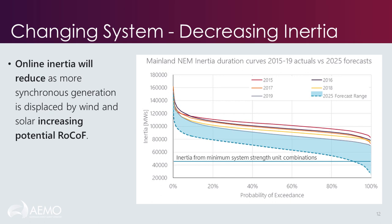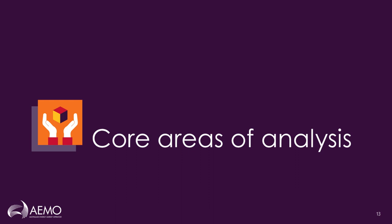The lower most edge of the projected area is a conservative view of where inertia could go, coming from short run marginal cost modelling. What that shows is that by 2025, inertia could go as low as the amount maintained through the minimum system unit combinations — the units that must be online to support system strength. Jane will now take you through some of the core areas of our analysis and the results.